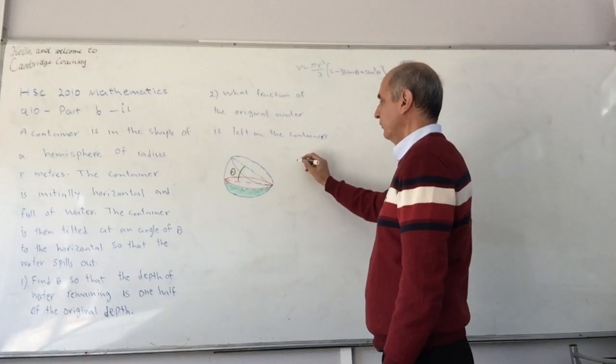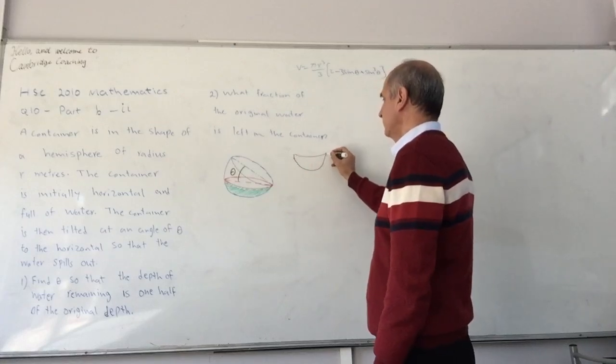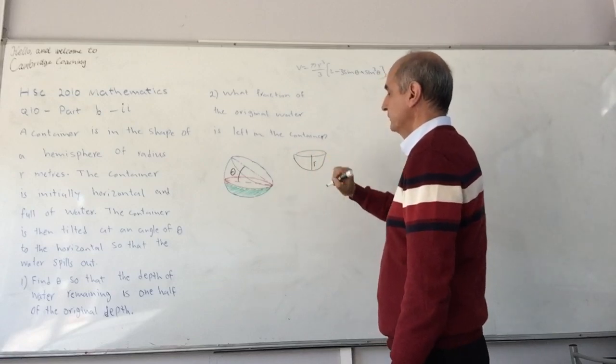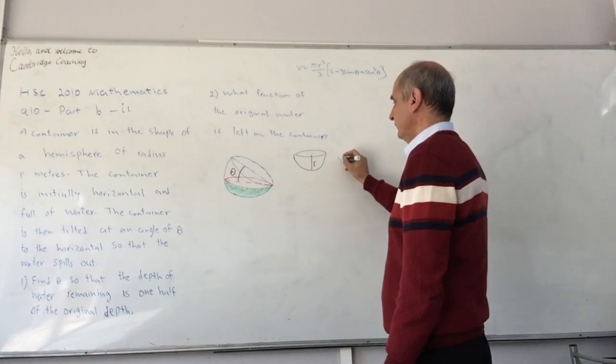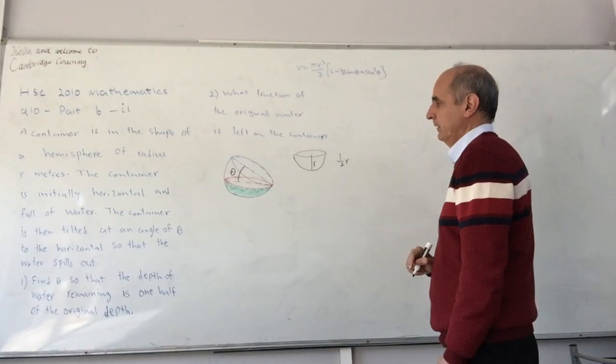So in the original case, the depth of the water was just equal to the radius. That's the radius. That was the depth before. Now we want the depth to be half of that, so half r. That is the new depth.